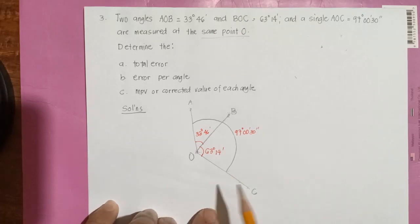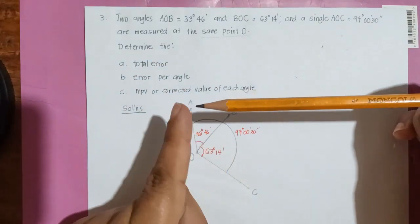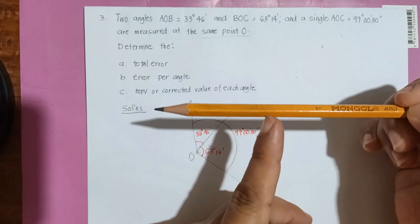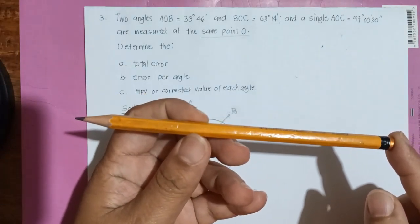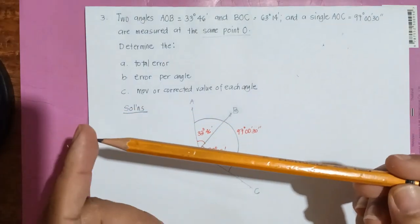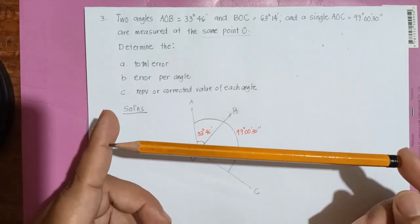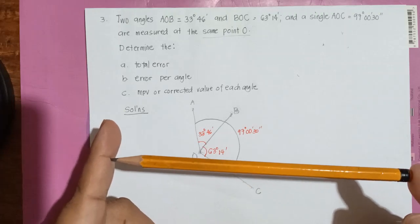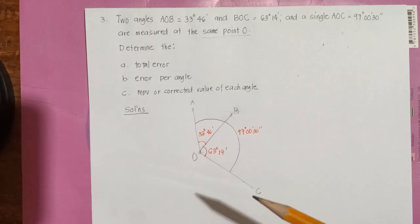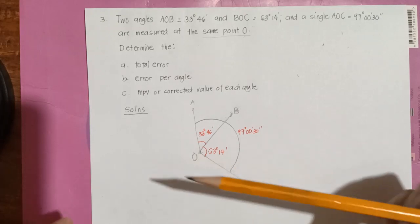We make redundant measurements to reduce error and to check. For example, it's similar to measuring a pen: you measure one segment as 2 inches, and another as 3 inches, then compute the total as 5 inches. To be sure, you also measure the whole length directly — that is also an example of redundant measurement. The purpose is to verify and reduce error.